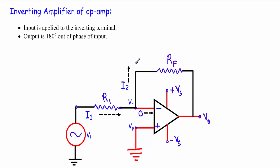Look at this circuit — this is the arrangement of the inverting amplifier circuit of an operational amplifier. This is a negative feedback configuration because the output is directly connected to the inverting terminal through a feedback resistor. Our sole purpose will be to find the output voltage equation and the ratio of output voltage to input voltage to determine the gain. In this amplifier, we apply the input voltage to the inverting terminal.